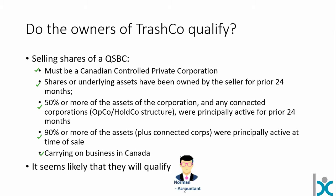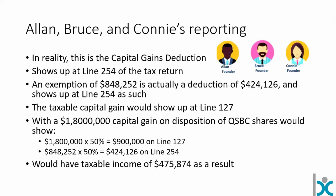Norman looks at the fact pattern and says yeah, it looks good to go. There's nothing too unusual with TrashCo. If it were a more complicated scenario, we might need to bring a tax lawyer in, but Norman is fairly confident. He says, if you take that deal, you'll be able to qualify. Now let's assume this goes ahead — I want to show how this looks on the tax return, because understanding that can help with the underlying math.